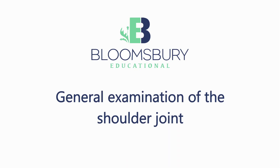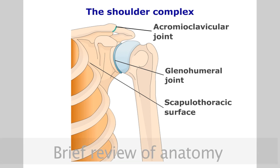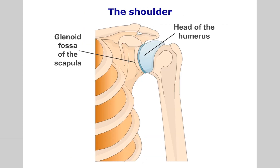The shoulder complex consists of the glenohumeral, acromioclavicular and sternoclavicular joints, and also the scapulothoracic surfaces. The glenohumeral is the synovial ball and socket joint forming the articulation between the head of the humerus and the shallow glenoid cavity of the scapula.